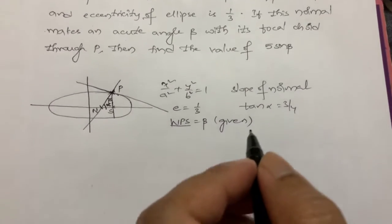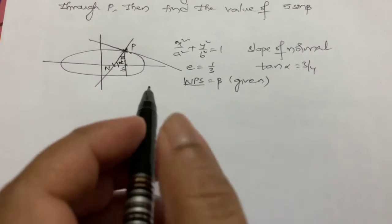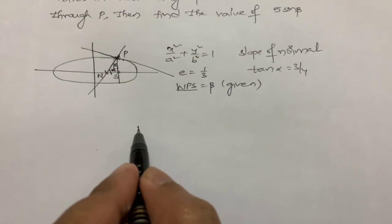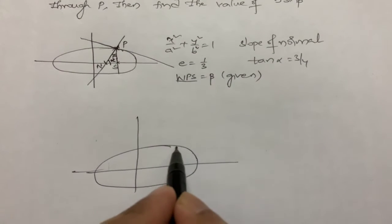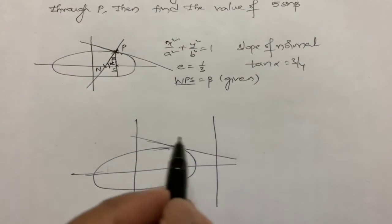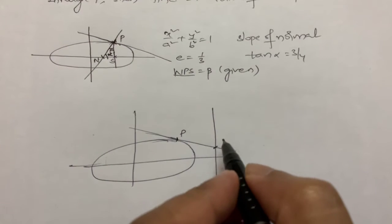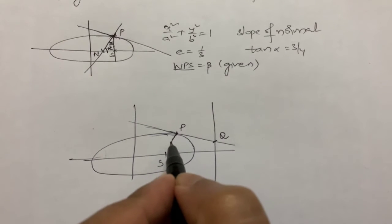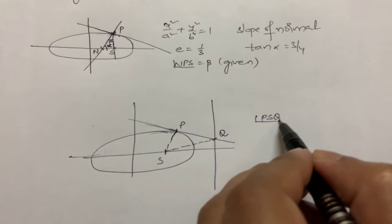We have to find the value of sin β. We will use a property involving the directrix: we consider the directrix and draw a tangent. There is point P, let us say P, S, Q, where S is the focus. We join these points, and angle PSQ is equal to π/2.